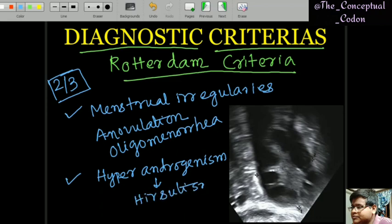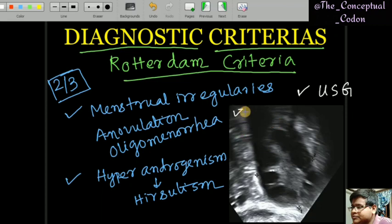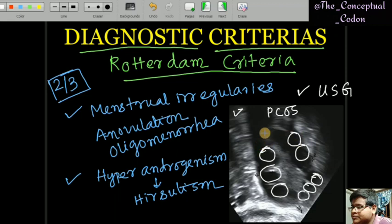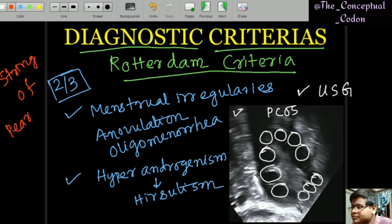The third criteria is a radiological feature: on USG, cysts will be seen on the ovary. These cysts are located always in the periphery, which gives rise to a characteristic appearance called the string of pearl appearance. Two out of these three criteria must be present to diagnose a woman as a PCOS patient — this is Rotterdam's criteria.